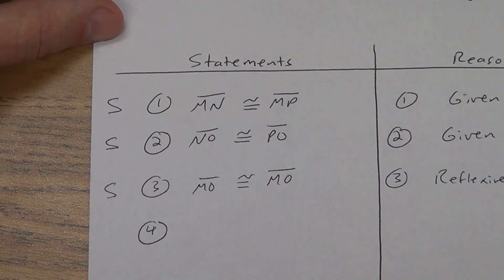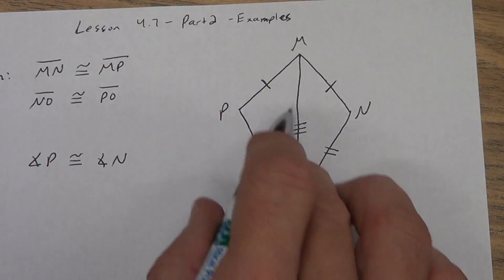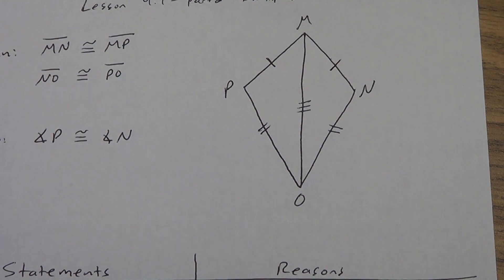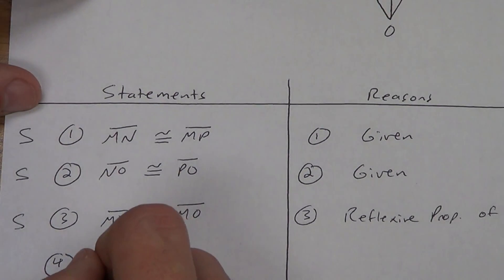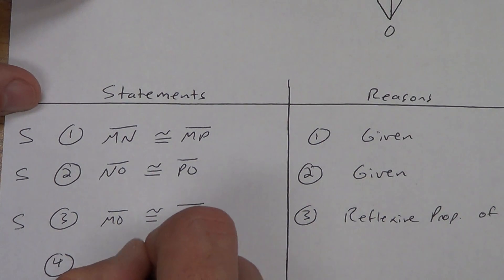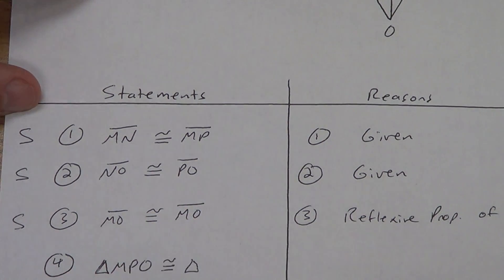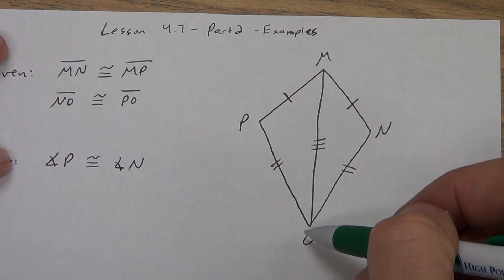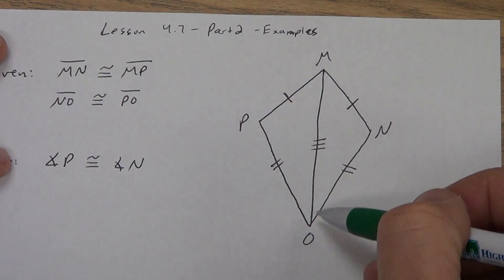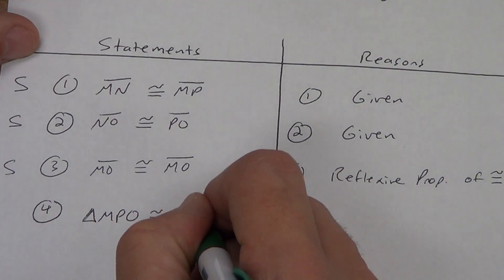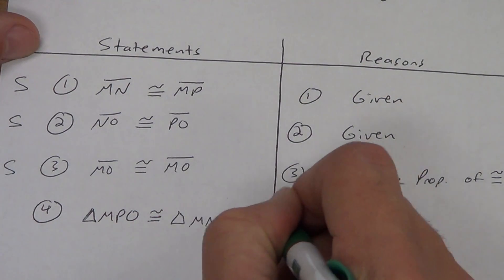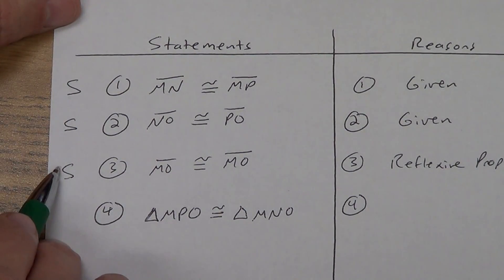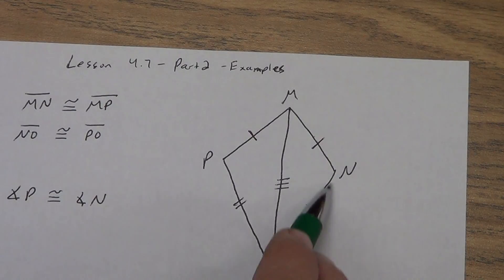So I'm going to say my triangles are congruent now in step four. It does not matter how you name the first triangle. Let's go with MPO. Triangle MPO is congruent to triangle MNO — we have to get the correspondence right. What's our reason? That's why we write this stuff off to the side — it helps with our reason. We double-check our picture for the order.